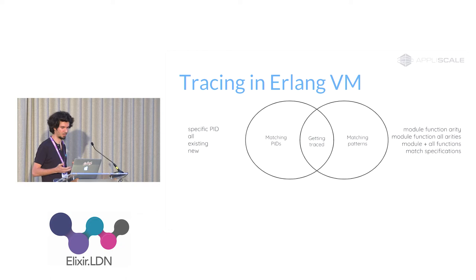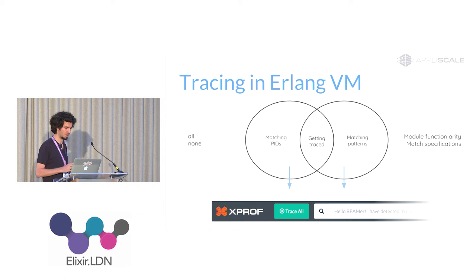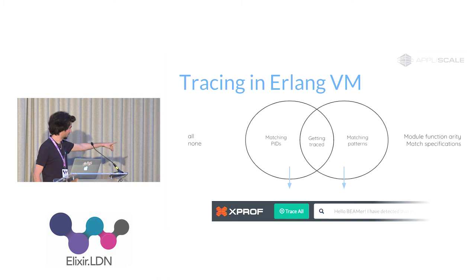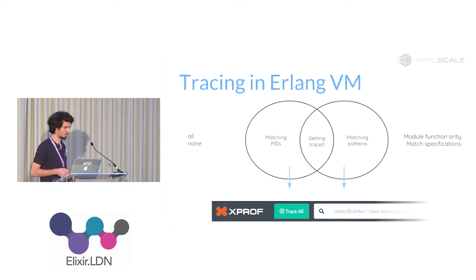Additionally, you can specify something like a match spec to narrow things down further. In X-Prof, only a subset of this is supported — you can select all processes or none of them. This relates to the big green button on the X-Prof UI, which is a big on/off switch for tracing. Then the function is specified in the text box.